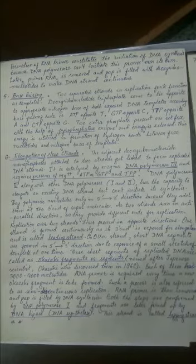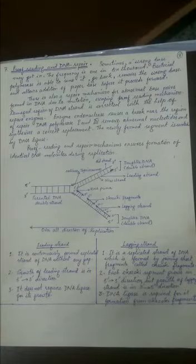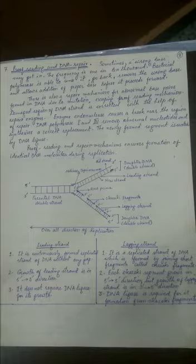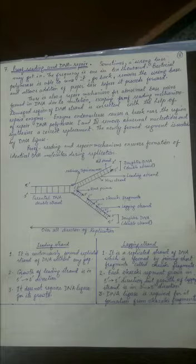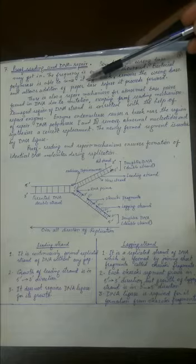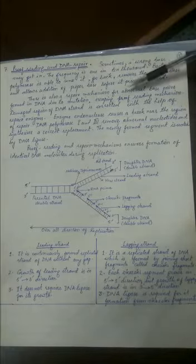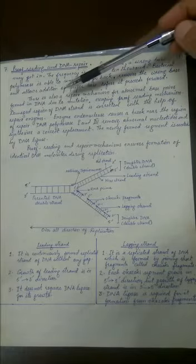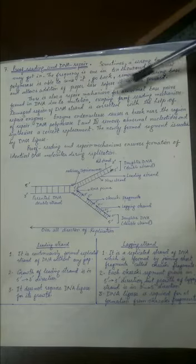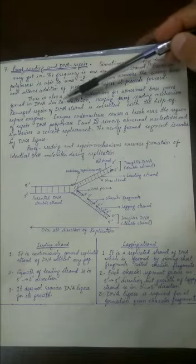The next topic is proofreading and DNA repair. Sometimes a wrong base may get incorporated — the frequency of this is one out of every ten thousand, similar to how we make mistakes while typing. Bacterial DNA polymerase is able to sense this mistake, go back, remove the wrong base, and add the correct base according to the complementarity rule. In eukaryotes, there is also a repair mechanism for abnormal base pairs formed due to mutation.